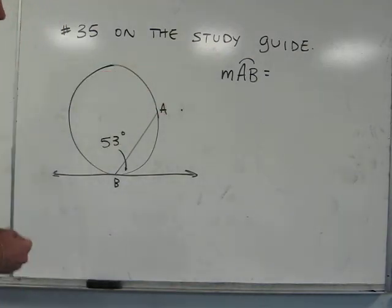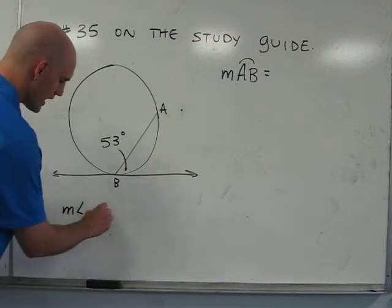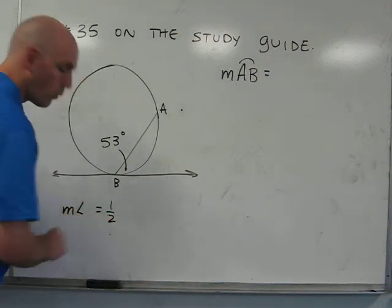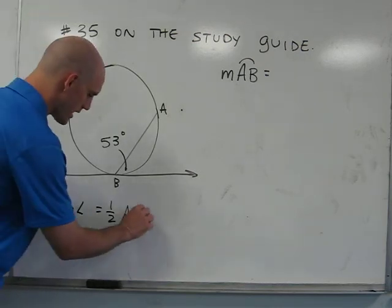We have a theorem that tells us the measure of the angle equals one half the measure of the inscribed arc, or arc AB.